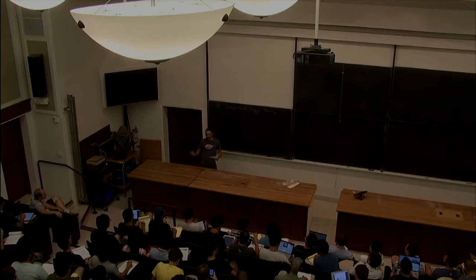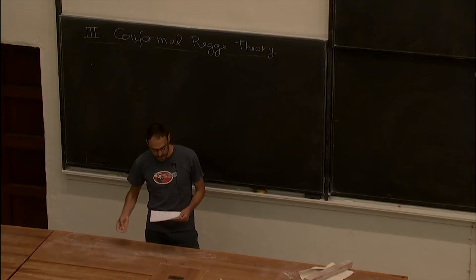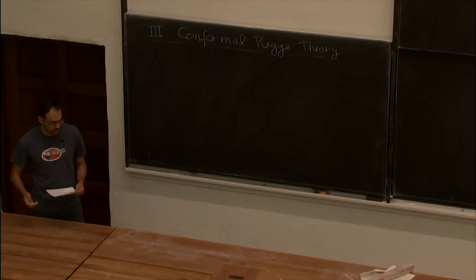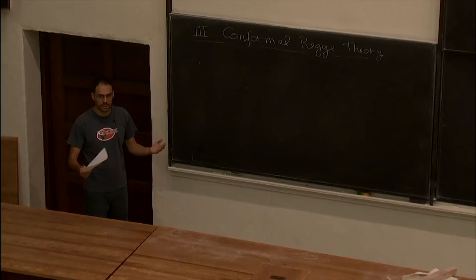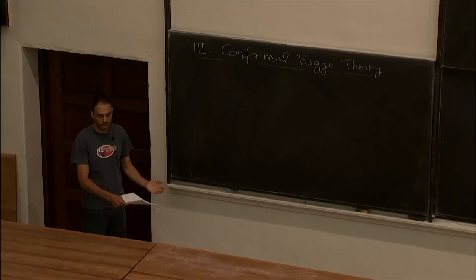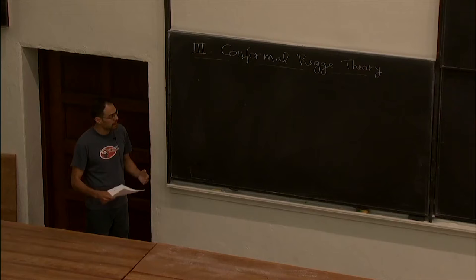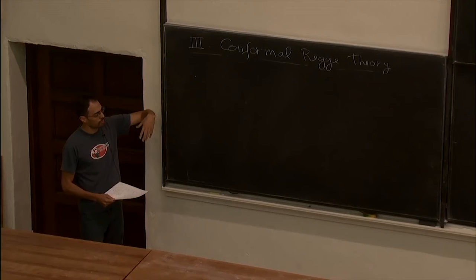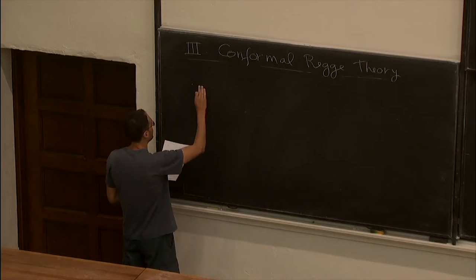My hope is that this won't take more than 15 minutes. I'm trying to connect the development we discussed in Regge theory for scattering in quantum field theory. There are very similar techniques you can apply in conformal field theory. We will derive the same two types of Regge results: organizing particles into trajectories — here we will organize operators into Regge trajectories — and also the high energy limit of a scattering amplitude, which here corresponds to the Regge limit of a four-point function.